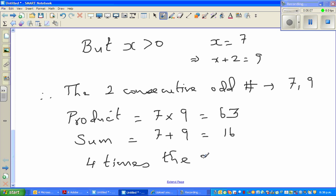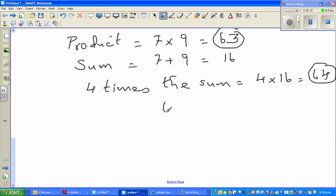And then what's the sum? The sum is 7 plus 9, which is 16. And 4 times the sum would be 4 times 16, which is 64. And that's what we are saying - that this is one less than this.